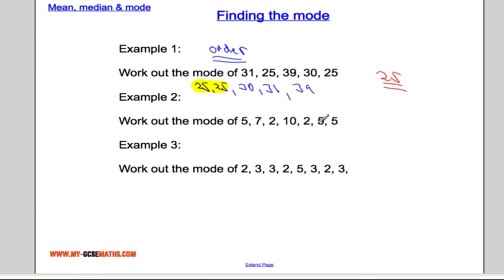Example 2. Slightly bigger data set here. Again, put it in order. So we get 2, 2, 5, 5, 5, 5, 7, and 10. And the most common data point seems to be 5. So 5 is our mode.